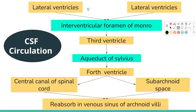CSF is mainly produced by a structure called the choroid plexus in the lateral, third, and fourth ventricles. CSF flows from the lateral ventricles to the third ventricle through the intraventricular foramen of Monroe. The third and fourth ventricles are further connected to each other by the cerebral aqueduct of Silvius. CSF then flows into the subarachnoid space through the foramen of Lushka and Magendie. Absorption of CSF into the bloodstream takes place in the superior sagittal sinus through structures called arachnoid villi.